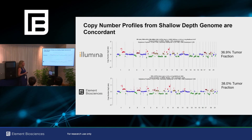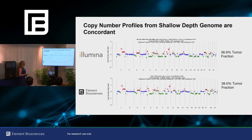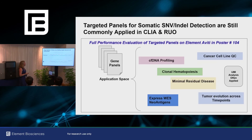Just to show you what an actual sample looks like, this is the output of the assay. We deliver a copy number profile, a tumor fraction estimate, and a ploidy estimate. We're really encouraged by the results we see here. In this case, the Element sample had higher coverage, and we have very similar tumor fraction estimates. Any questions about low-pass sequencing? I'm going to switch to the targeted panels.